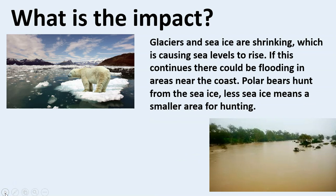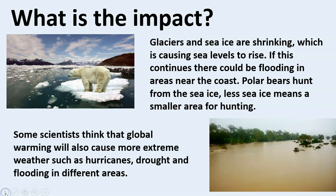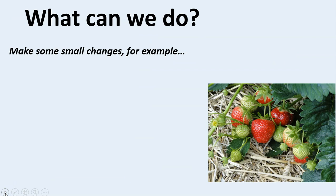Glaciers and sea ice are shrinking and that's causing sea levels to rise. If this continues there'll be flooding in areas near the coast. Polar bears hunt from the sea ice, and less sea ice means a smaller area for hunting. Some scientists even think that global warming will also cause more extreme weather such as hurricanes, drought and flooding in different areas. The really hot sunshine we had all the way through April and May isn't really what it used to be like, so our climate is already changing, and scientists think a lot of that is due to global warming.